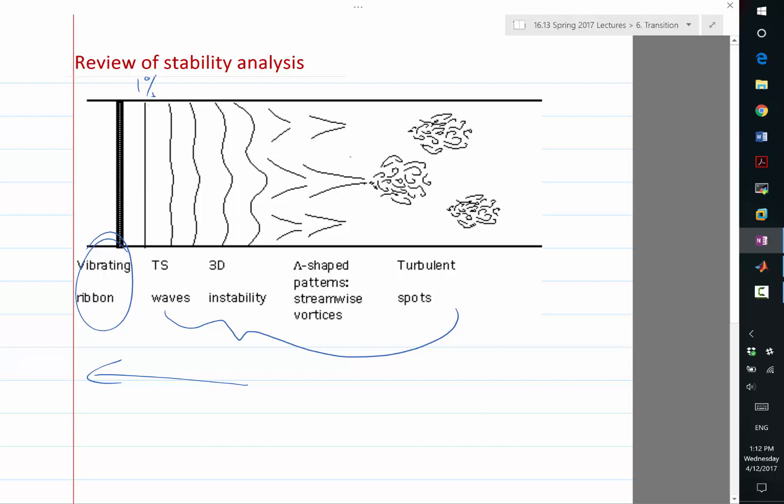Once it becomes 3D, this kind of lambda-shaped patterns start to appear. Basically, this waviness, they pinch into what they call lambda vortices, and these further break down into turbulent spots, and the spots merge with each other to form a fully turbulent boundary layer.